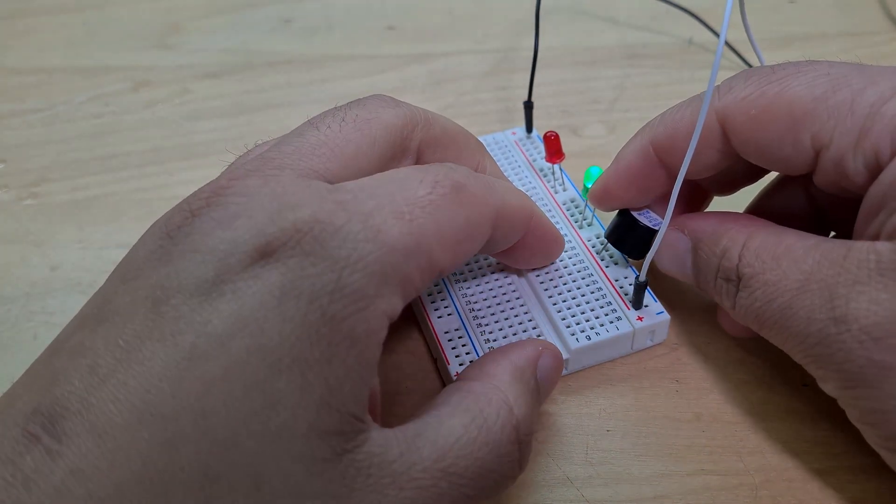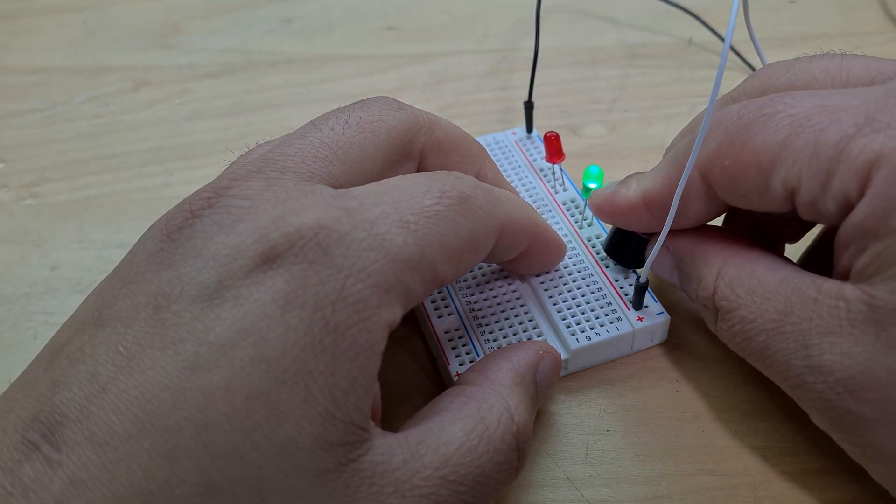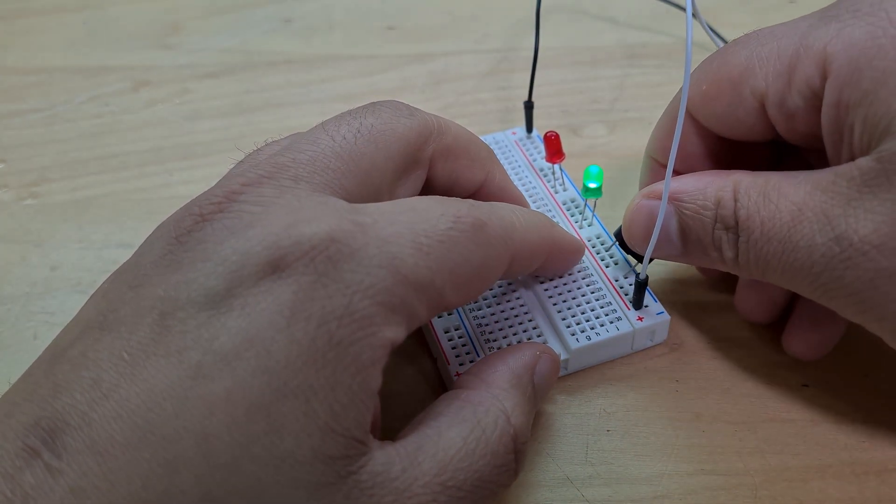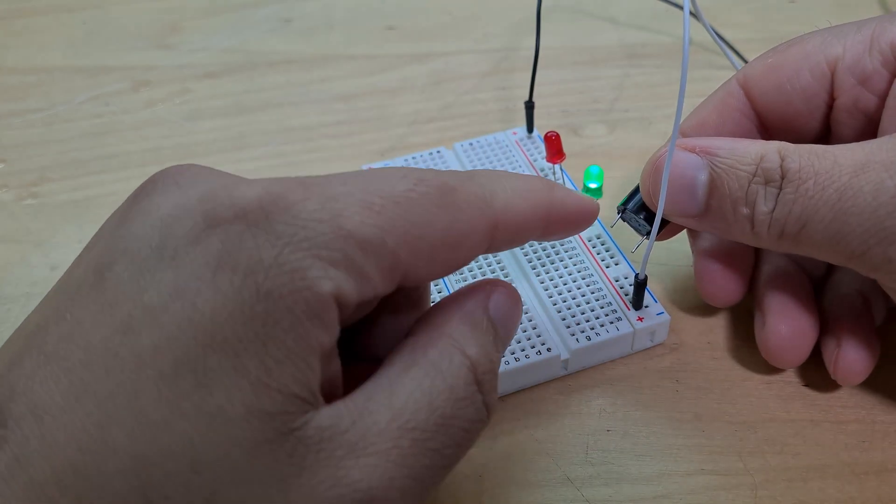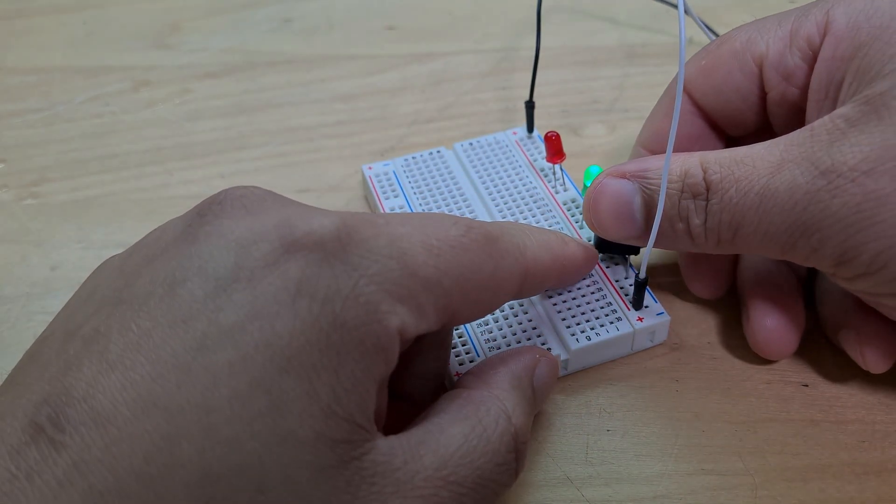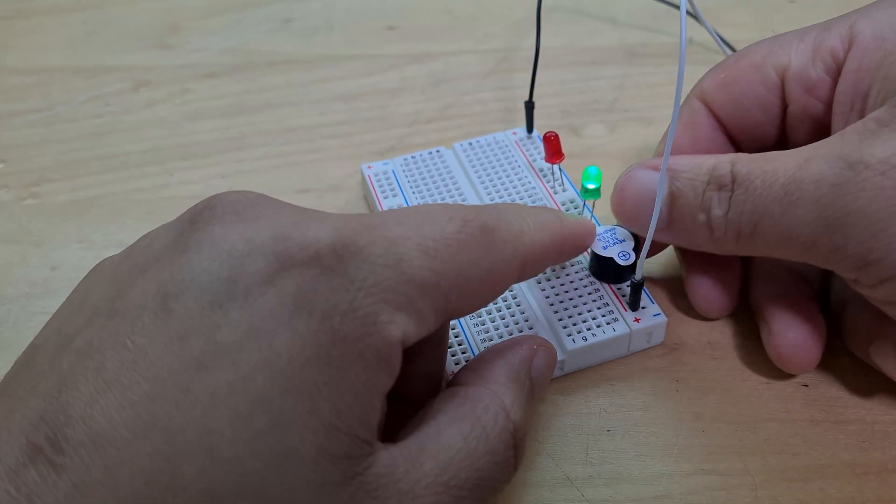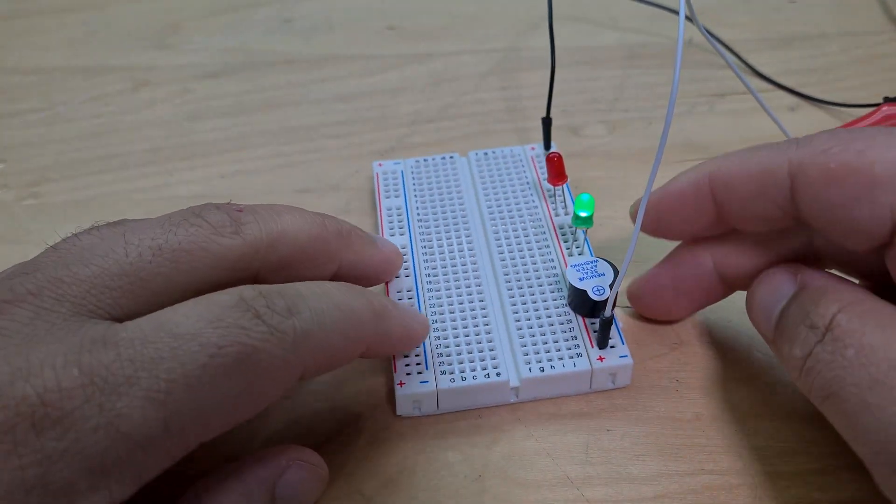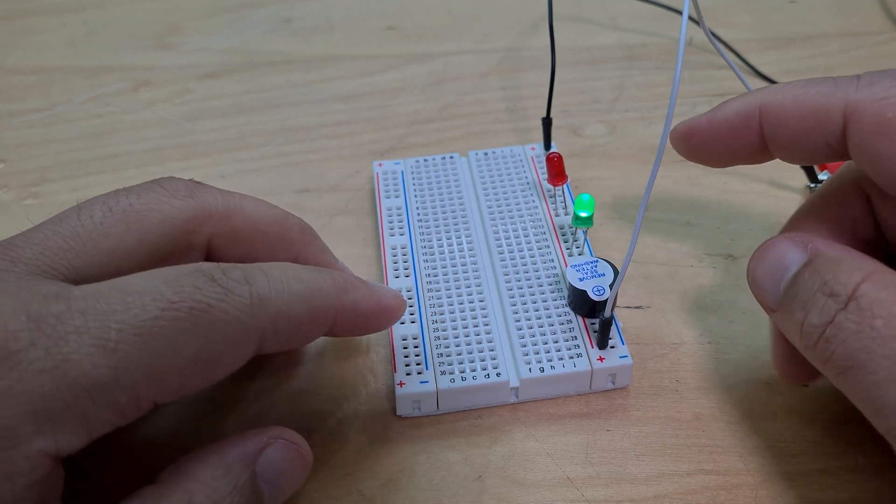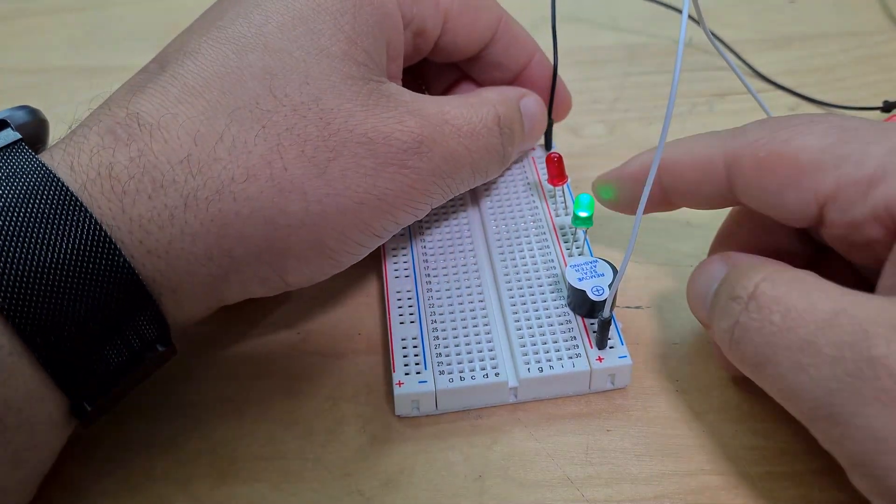So this is just a buzzer, and let's connect it so that if we do it the wrong way around, so the negative end to the positive rail and the positive end to the negative, so basically put it in reverse. Right, so now when it's connected, obviously it's not going to go.